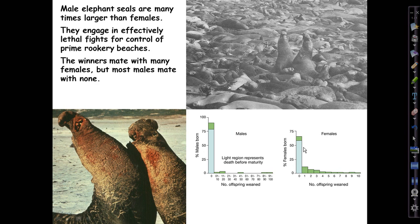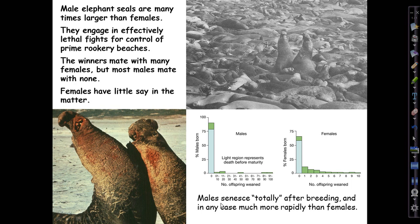The winners mate with many females, as these graphs show — enormous variation in reproductive success. Most males die before reproduction or, even if they live, never end up as a dominant male and mating. A small handful end up having extraordinary levels of reproductive success. Whereas for females, those that do reach sexual maturity pretty much all produce offspring. Females have little say in the matter because their need for these beaches is so great. Males only ever breed once, senescing completely after breeding — and they senesce much more rapidly than females.